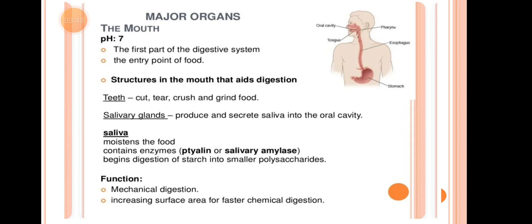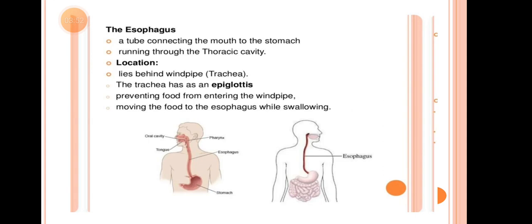The functions of the mouth include mechanical digestion and increasing surface area for faster chemical digestion. Next is the Esophagus — a tube connecting the mouth to the stomach, running through the thoracic cavity. Its location is behind the windpipe (trachea).